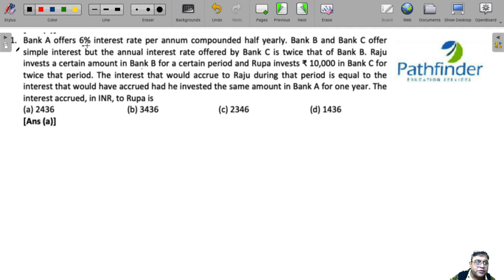Bank A offers 6% interest rate per annum, compounded half yearly. So let me write down that information. Bank A offers 6% CI compounded every 6 months.